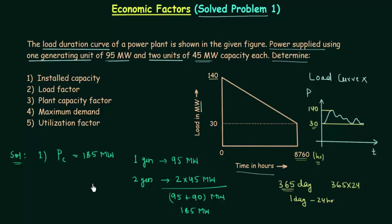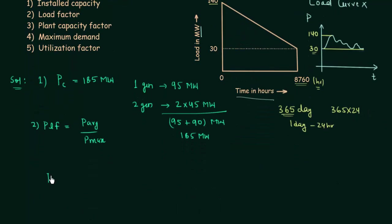In the second part we will calculate the plant load factor. It is equal to average power over maximum power. The maximum power is 140 megawatt. To calculate the average power we will first calculate the total area under the load duration curve and then divide it by the total time.